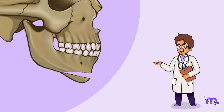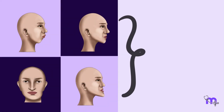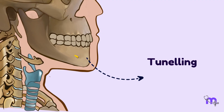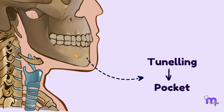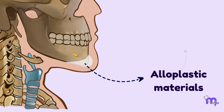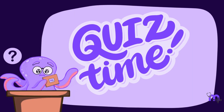In some cases, an osteotomy may not even be required for increasing the chin prominence. The chin deformities may be altered using alloplastic materials. Tunneling is done in the bone and a pocket is created, into which alloplastic materials such as silicone can be placed.